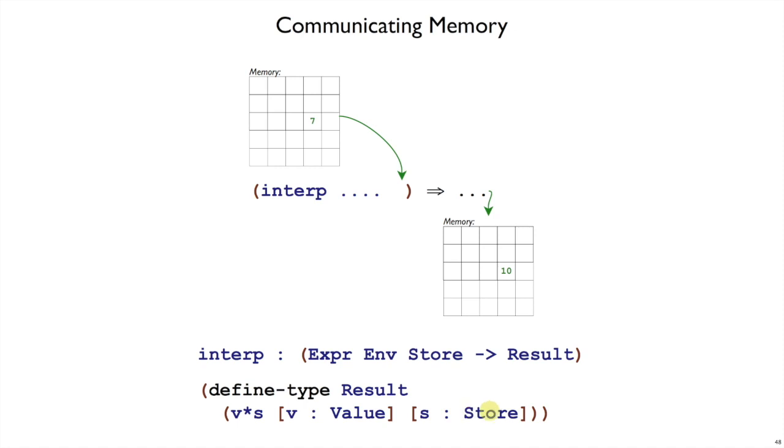One thing is the value and the other thing is the store. We just pair them together. So now our interpreter function is making explicit the channel of communication from the store coming in and the store coming out.